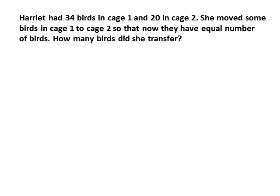Let's read the problem. Harriet had 34 birds in cage 1 and 20 in cage 2. She moved some of the birds in cage 1 to cage 2 so that now they have equal number of birds. How many birds did she transfer?